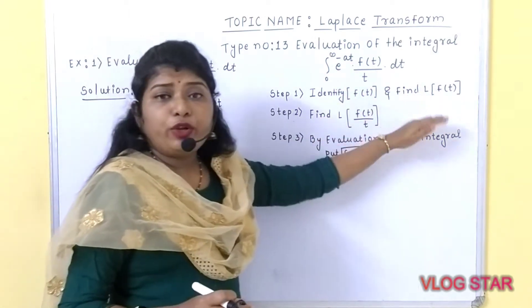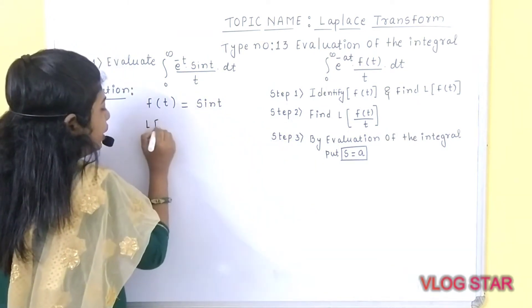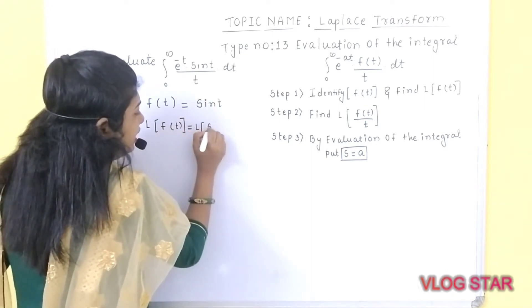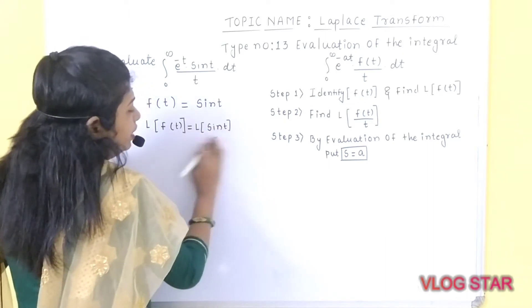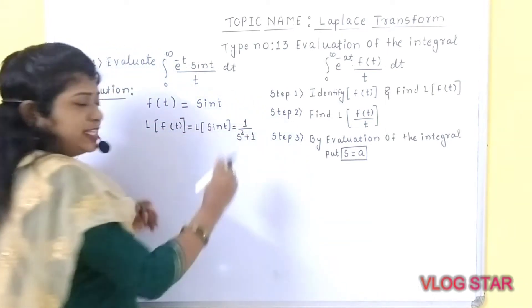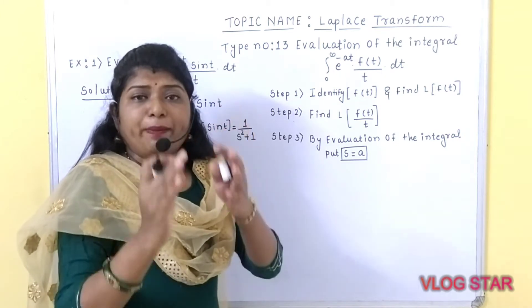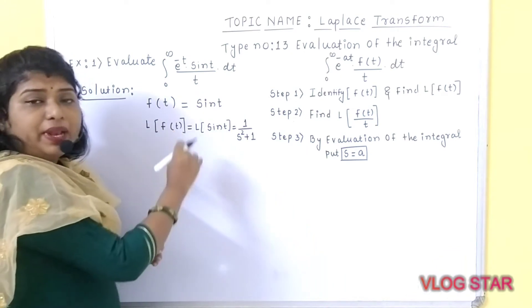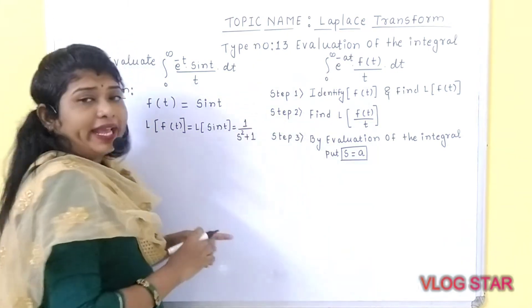Next, you need to find out the Laplace transform of that particular function. If you are going to take Laplace of f of t, what is the Laplace of sin t? Laplace of sin t is nothing but equal to 1 upon s squared plus 1. As per the standard result, Laplace of sin(at) is equal to a by s squared plus a squared. In this particular case, a is equal to 1, so Laplace of sin t equals 1 upon s squared plus 1.